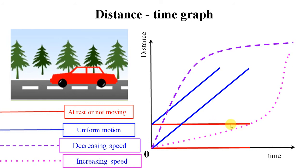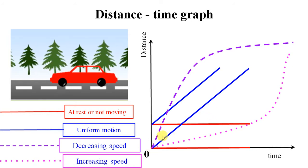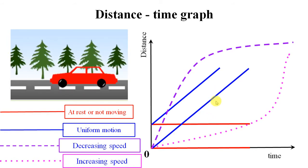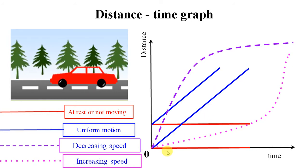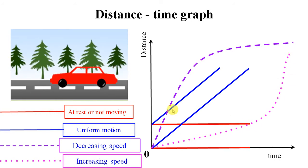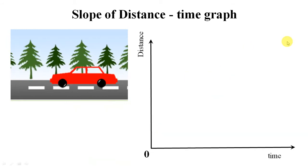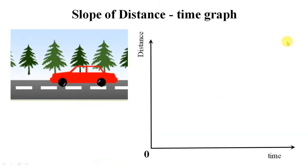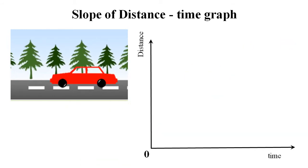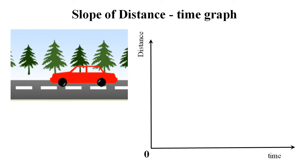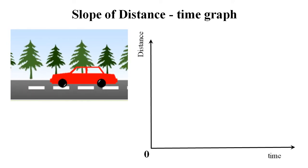To summarize: the first case is the body at rest, the second is uniform motion, the third is increasing speed, and the fourth is decreasing speed. There is a very important phenomenon called slope, and for a distance-time graph, slope gives you a very important parameter.